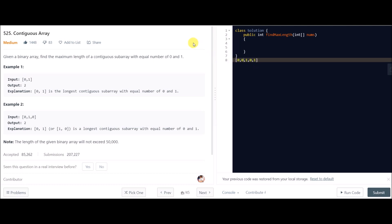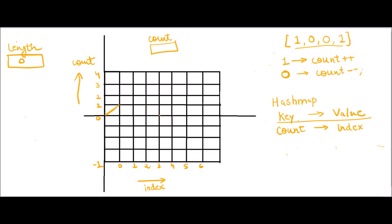Here is how we are going to solve this problem. Suppose we are given this binary array. I have taken a variable called count, initialized to 0, and a variable length that will be our answer. I also have a graph that will represent the value of count, where the x-axis is the index. This graph will be tracked using a hash map, which I have initialized. Before iterating, count is 0, so I enter count=0 with index=-1 in the hash map.